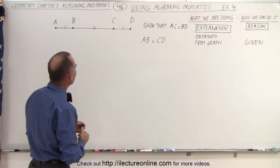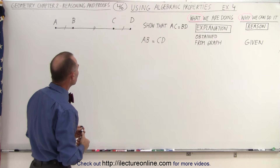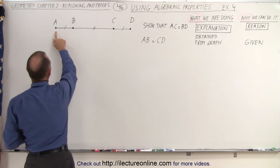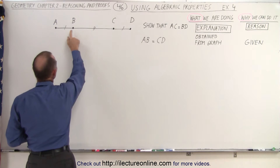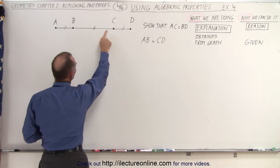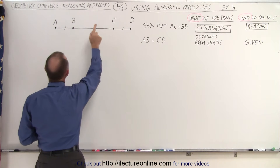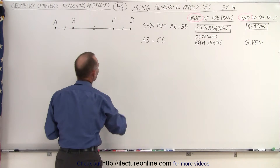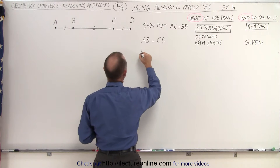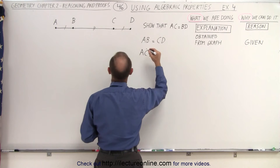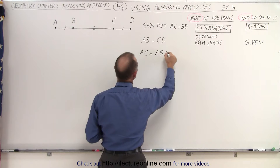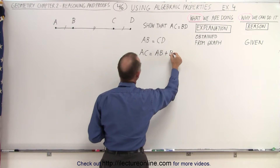The next thing we're going to do is show that the distance from A to B plus the distance from B to C must equal the distance from A to C. So AC is equal to the sum of AB plus BC.